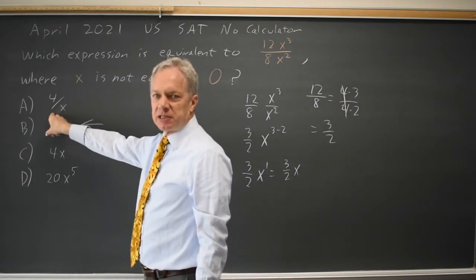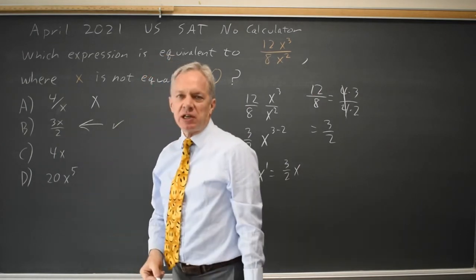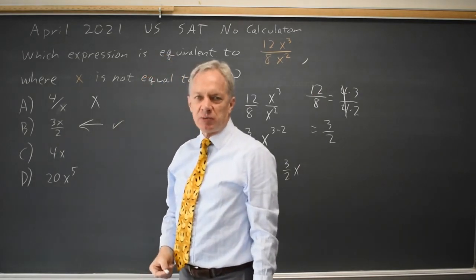Choice A gives us 4 when x equals 1, so that's not correct. Choice B gives us 3 halves, so that could be correct. But you have to check all four answers if you're plugging in numbers.